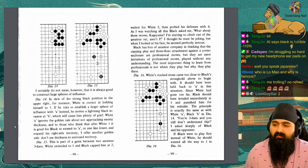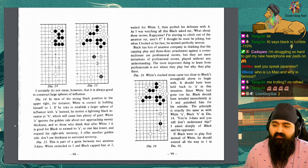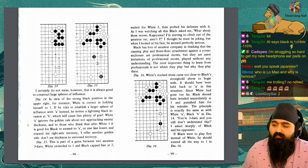I certainly do not mean, however, that it is always good to construct large spheres of influence. Diagram 14. In view of this strong black position in the upper right, for instance, white is correct in holding himself to one. If he tries to establish a larger sphere of influence with A instead, he invites a lightning black invasion at B, which will cause him plenty of grief. White A ignores the golden rule about not approaching enemy thickness.